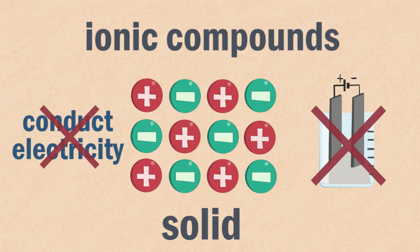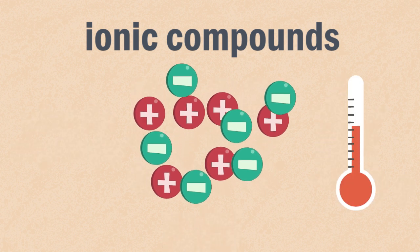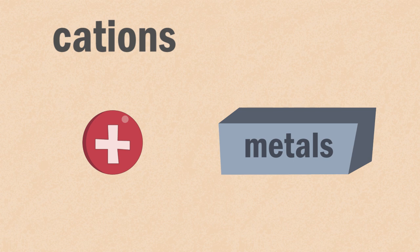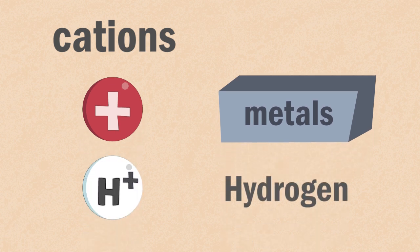But one way of making it conduct is to heat it until it melts. In our examples here, the cations or positive ions are all metals, but it's worth noting that hydrogen can also be a cation in an ionic compound.